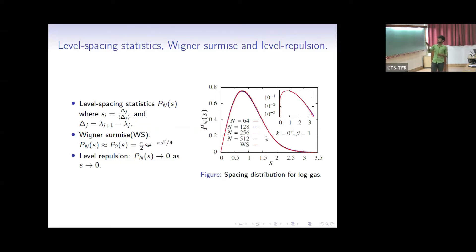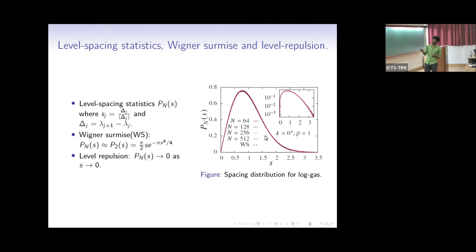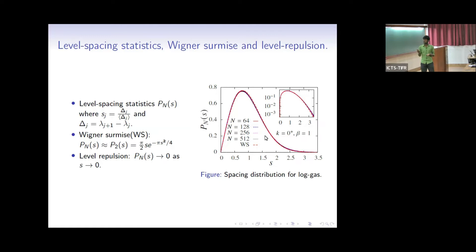The Wigner surmise distribution has the form pi over 2 times S times e to the power minus pi S squared over 4. One interesting and noticeable thing is that if you put S equal to 0, the distribution is actually 0 — that means the probability of getting two eigenvalues to be the same is zero. This is actually known as level repulsion.